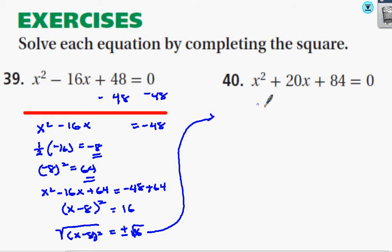So I have x minus 8 equals plus or minus 4. And to find x, I simply add 8 to both sides of the equation.